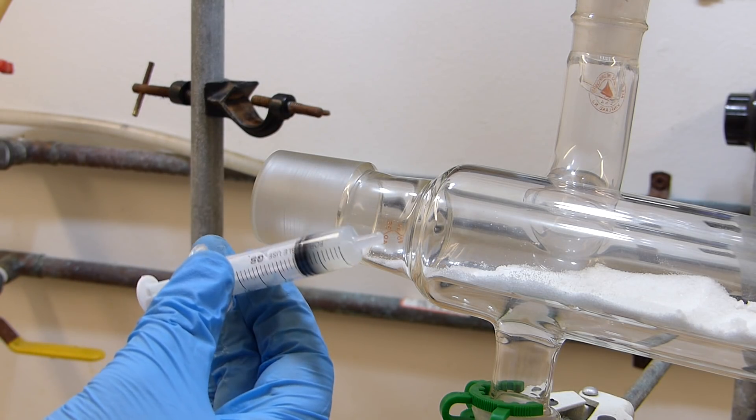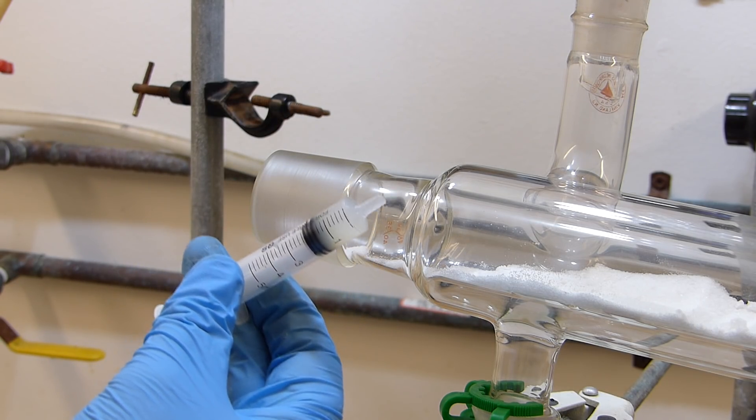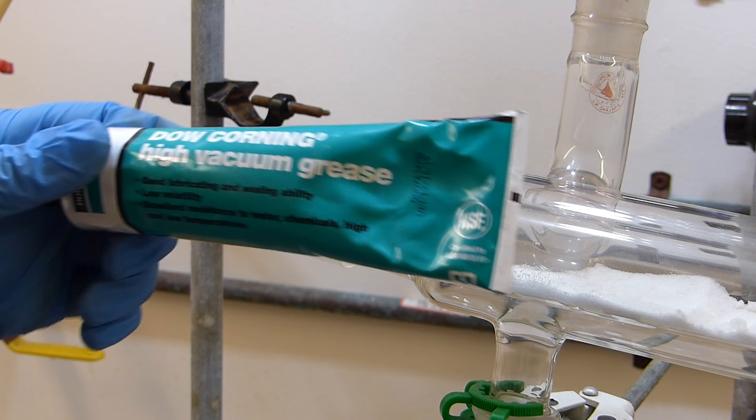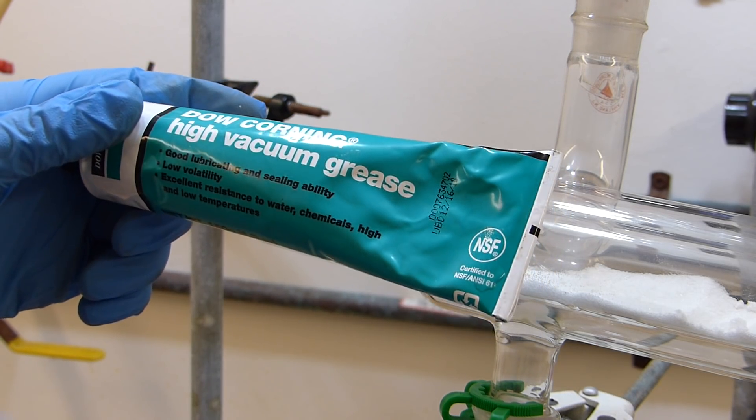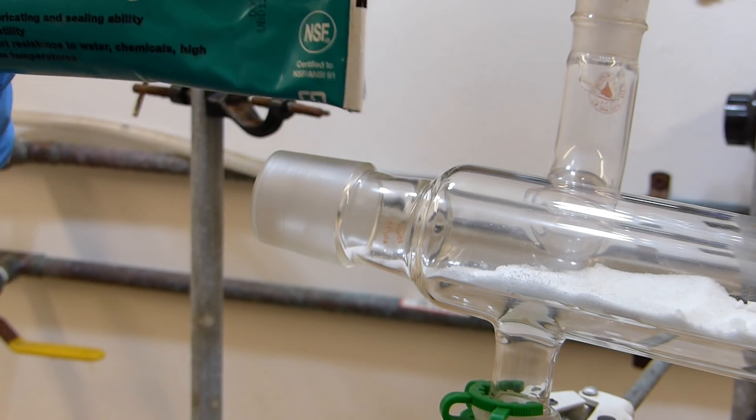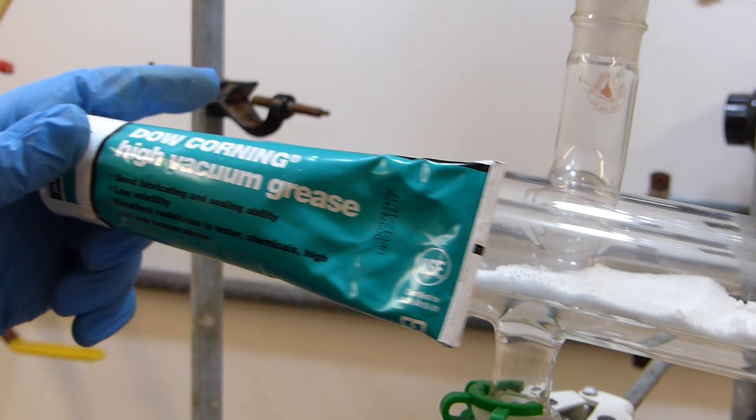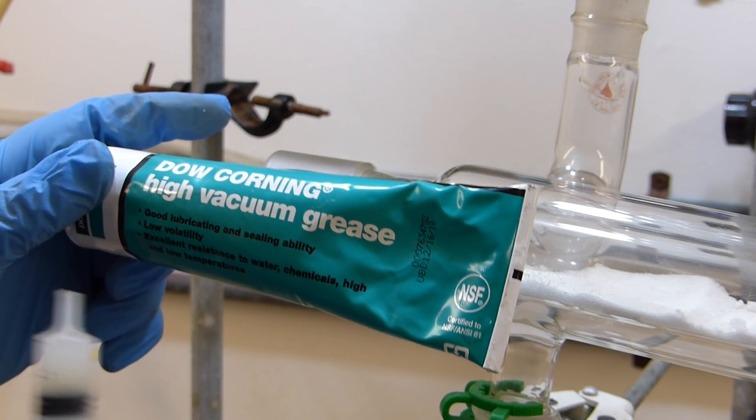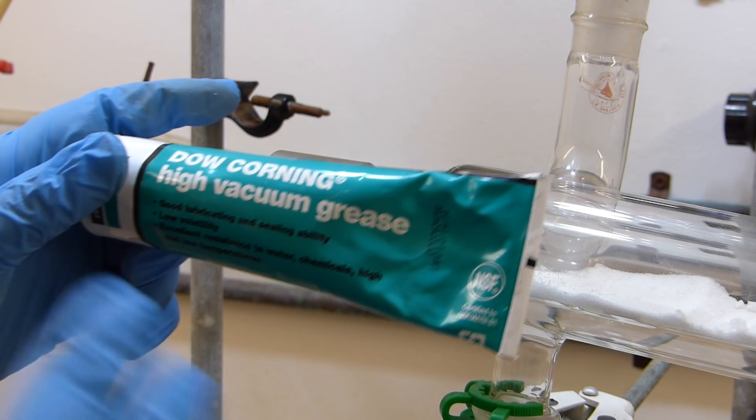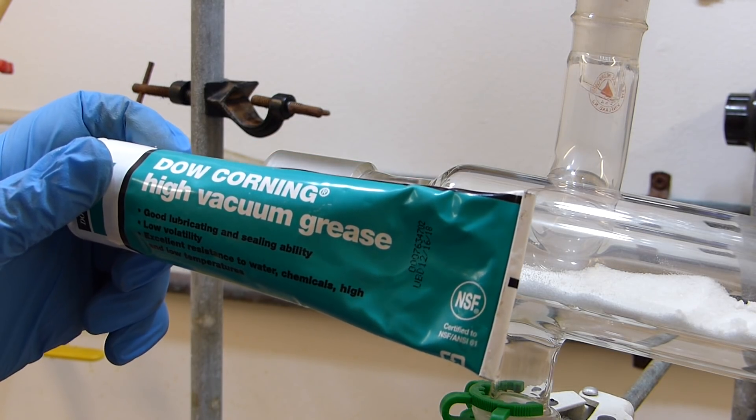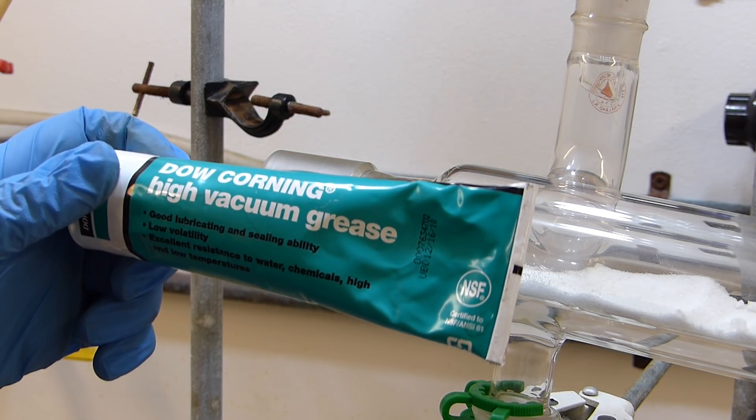I'm going to grease this joint up now. I've got a little bit of my vacuum grease here in this syringe. The grease I use is this Dow Corning high vacuum grease, which is really good stuff. It's extremely resistant to pretty much all chemicals because it's a perfluorinated grease, which means that it's really long chain hydrocarbons saturated with fluorine instead of hydrogen, which means that it's very chemically inert.